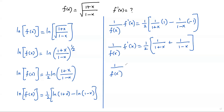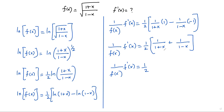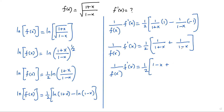I need to simplify the right side. The two fractions don't share the same denominator and the denominators contain variables, so I'll use cross multiplication to add them. Multiplying the numerator of the first fraction by the denominator of the second and vice versa: 1·(1−x) + 1·(1+x) over (1+x)(1−x), giving (1−x + 1+x) over (1+x)(1−x). The −x and +x cancel in the numerator.